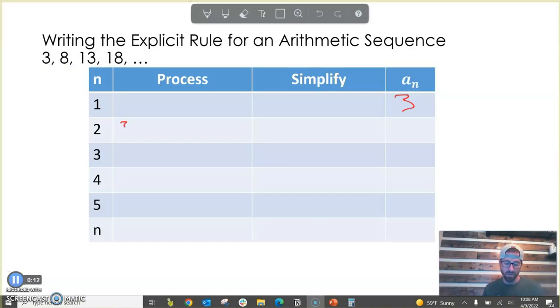So to get our next term in the sequence, we can take our 3 that we started with, and we add 5 to it. And there's not going to be a lot in our simplify column, but we see that's how we get our 8. We took our first term of 3, and we added 5 to it.